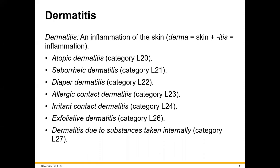In medical terminology, 'itis' means inflammation. So dermatitis is basically inflammation of the skin, or more specifically, that outer layer of the skin. There are several different types, as you can see illustrated here. It can be atopic dermatitis, the L20 category; seborrheic dermatitis, L21; diaper dermatitis, L22, and so on. But regardless of the type, this inflammation of the outer layer of the skin is dermatitis.